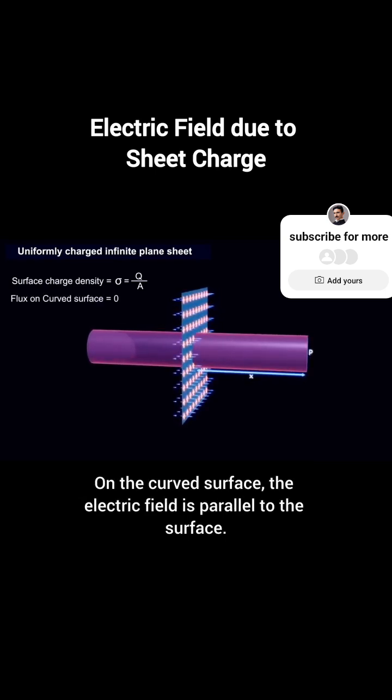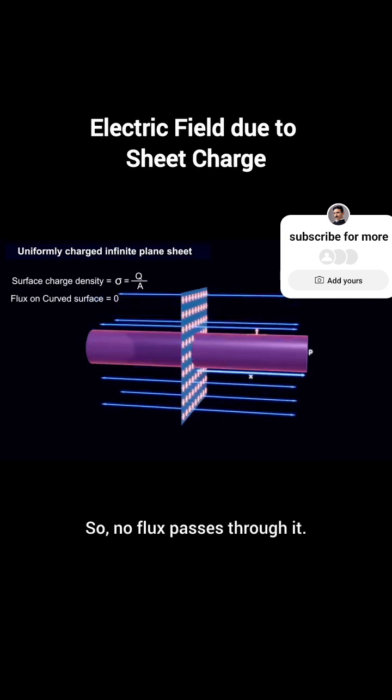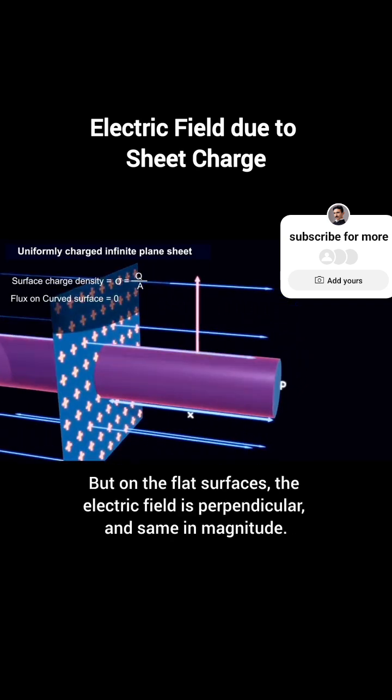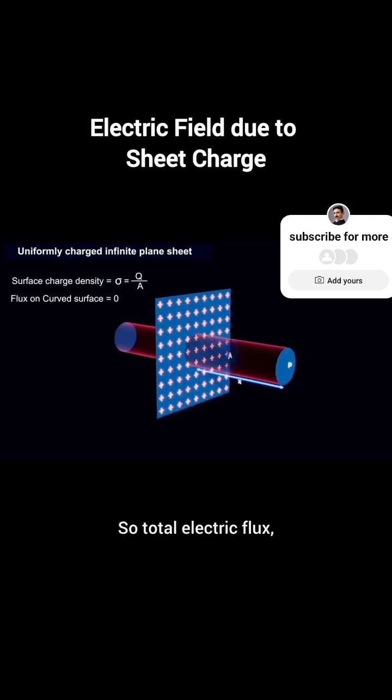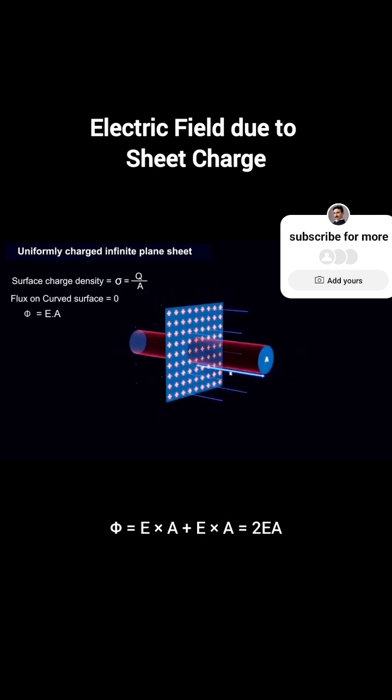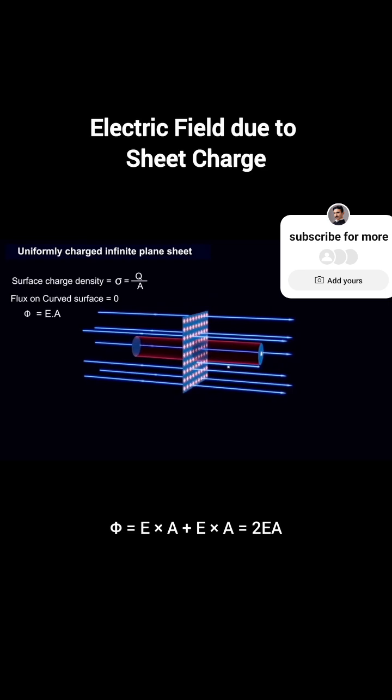On the curved surface, the electric field is parallel to the surface, so no flux passes through it. But on the flat surfaces, the electric field is perpendicular and same in magnitude, so total electric flux phi is E times A plus E times A, which is 2EA.